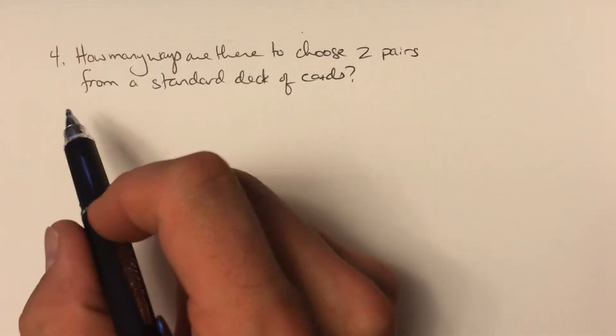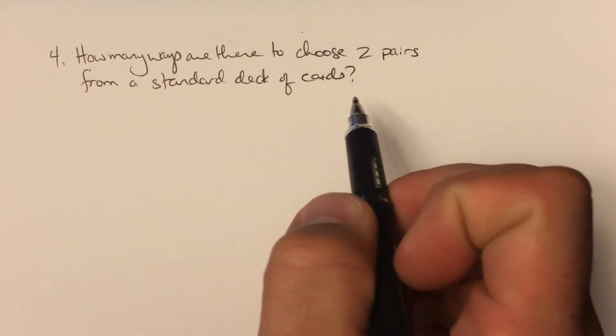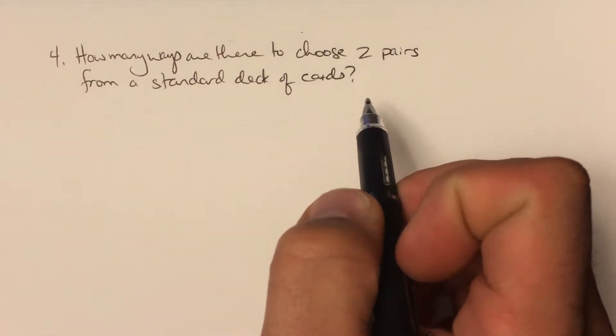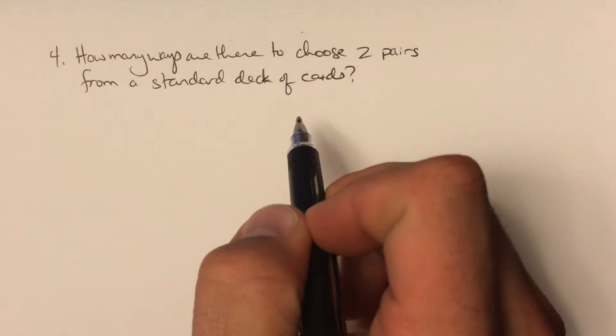Lots of folks had trouble with question four from your assignment, which was: how many ways are there to choose two pairs from a standard deck of cards? This is another one of those questions that is intentionally a little bit ambiguous.